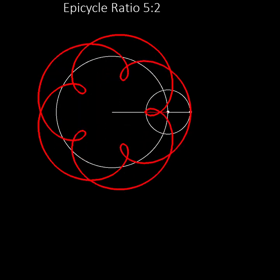Notice that this curve has loops which were not present in the hypocycloid curve. In this epicycle, the pen is on the circumference of the moving wheel, so it is at position 1.